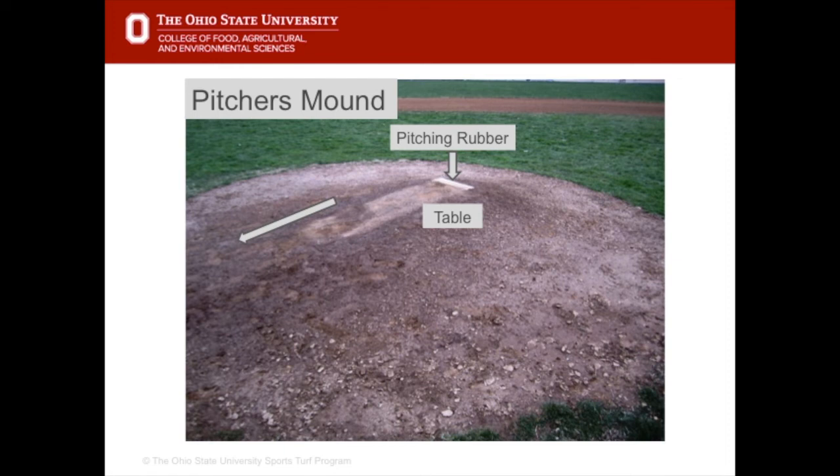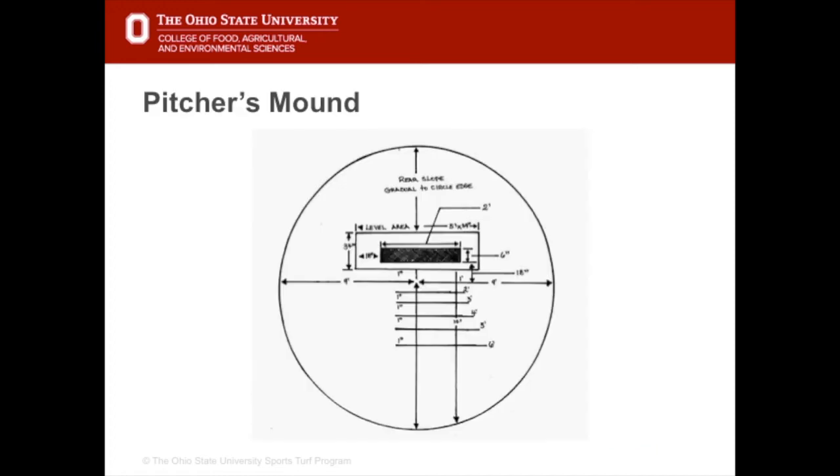The pitcher's mound comprises of a flat area or table at the top of the mound with the pitching rubber positioned front centre. The area in front of the table is sloped one inch for every foot of run. We'll talk more about the pitcher's mound later.